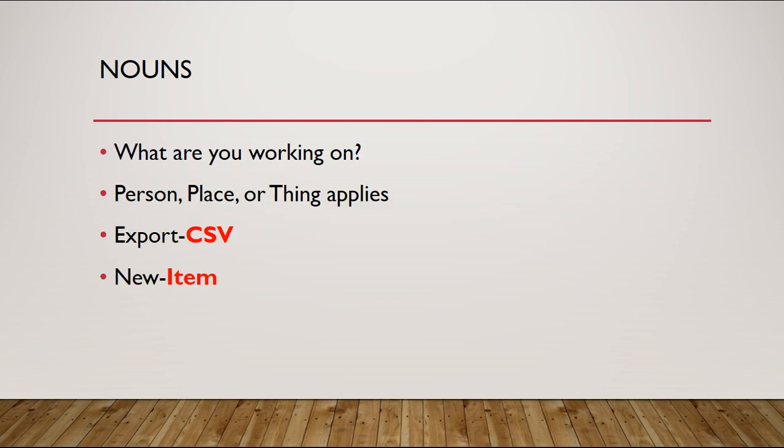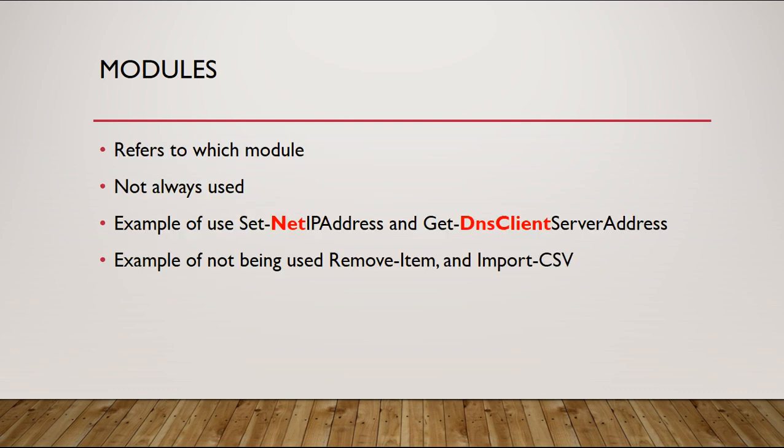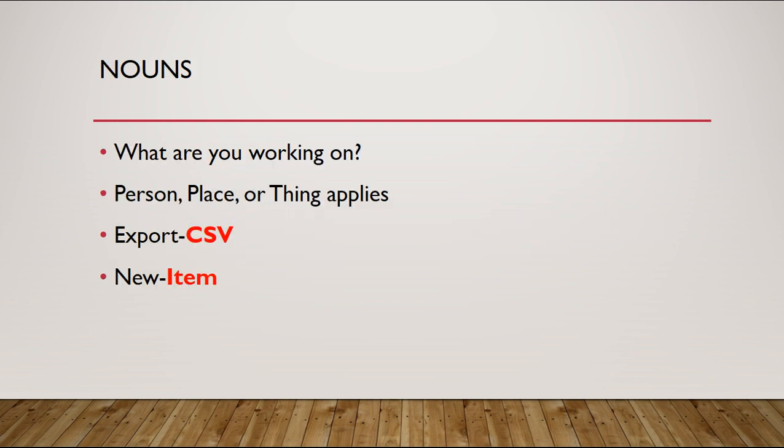Let's take a look at nouns. Nouns are another part of the command — they answer: what are you working on? It's a person, a place, a thing — the same rules that applied back in school apply to PowerShell commands. Take export-csv: csv is the noun. We also had import-csv in the previous example — there's no module, but it does have a noun. So it's got a verb and a noun, and you can have a module in between if you want to.